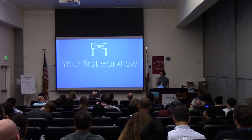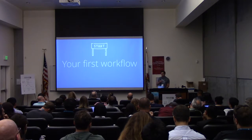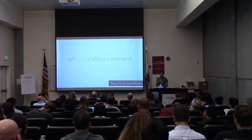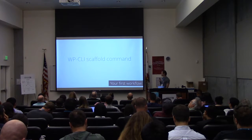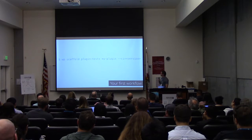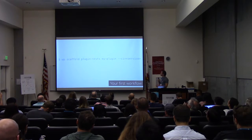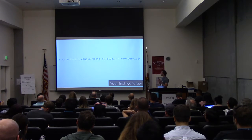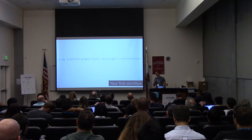So how can you get started with this if you've never done continuous integration before? The easiest way is with WP-CLI. There's a command called scaffold. This is an example for plugins — you just say you want to scaffold the plugin tests for your plugin and specify which service you want. All the ones we've mentioned, minus Buddy, are supported. By default it does Travis.